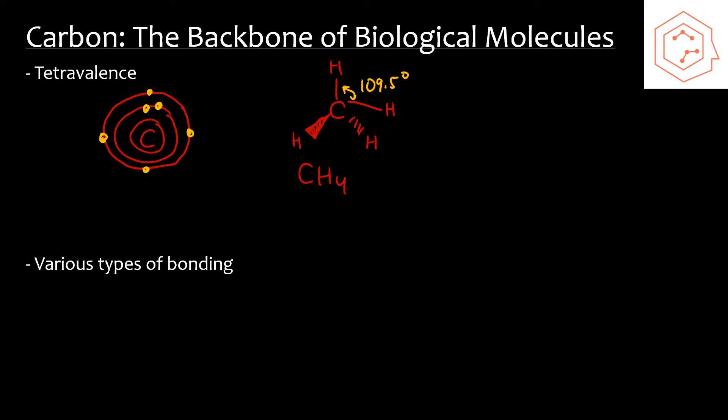Carbon also has various types of bonding patterns. Because of its tetravalence, carbon atoms are able to join with one another and form either single, double, or triple bonds. Depending on the type of bond formed, the shape of the molecule will change. This shape is tetrahedral for both carbons. In this one, each carbon is a trigonal planar shape, and in this one, each carbon is a linear shape.